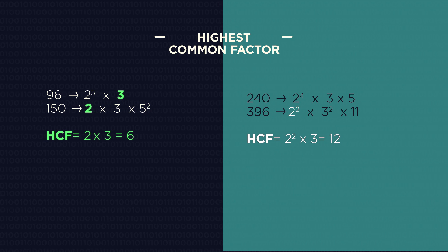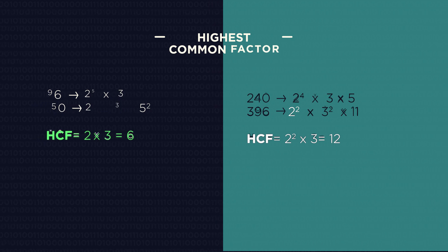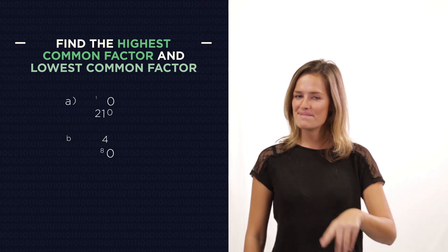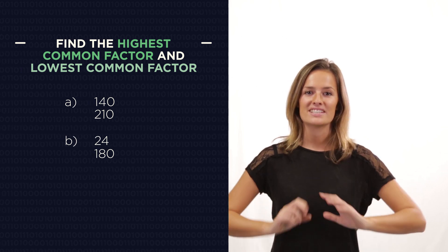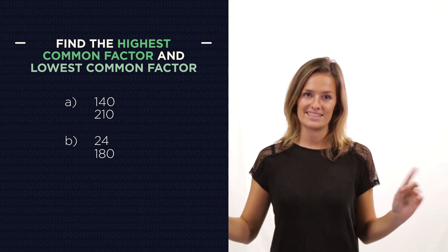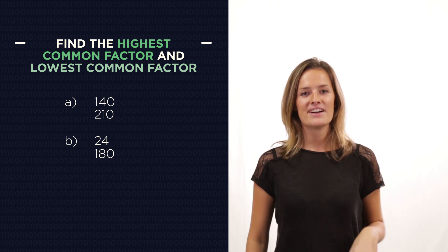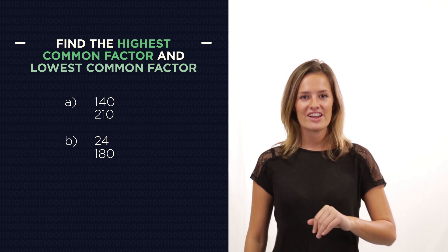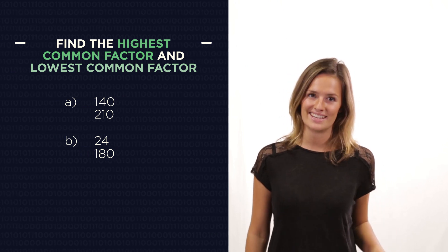So give these questions a go. Remember: for the lowest common multiple you take the largest amounts from either list, and for the highest common factor you can only take what's common to both lists.